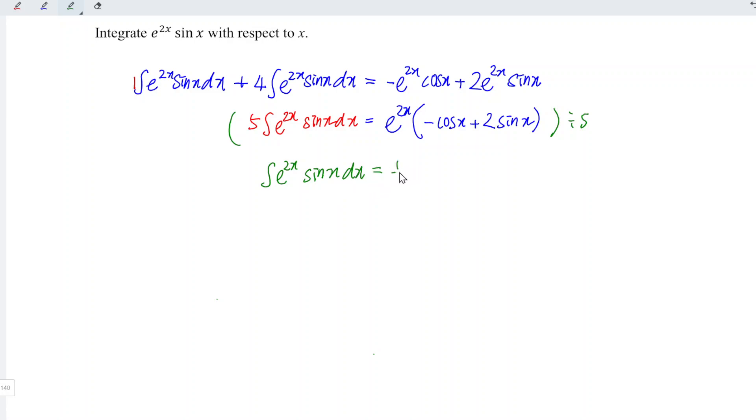And this is equal to 1 over 5 times e to the power of 2x times minus cos x plus 2 sin x. Since the integration is complete, we can plus the constant c and hence we're done.